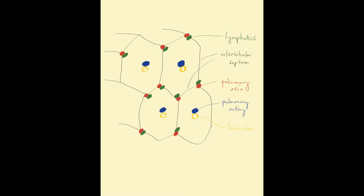So for the purposes of heart failure, you need to remember the interlobular septum, because this is where fluid is going to collect in the case of pulmonary venous hypertension. If you've got some resistance to pulmonary venous backflow back to the left atrium because of heart failure, you get pulmonary venous hypertension and plasma and fluid leaks out of the pulmonary veins into the interlobular septum, giving the so-called curly B lines.